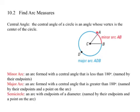So this central angle, we can have minor arcs. Arc formed when the central angle is less than 180 degrees. We're naming this minor arc AB because it's less than 180 degrees, less than half. A major arc is an arc formed with a central angle that is greater than 180 degrees. It's named by their endpoints and a point on the arc.